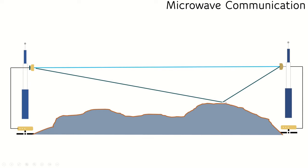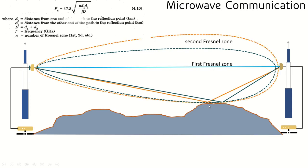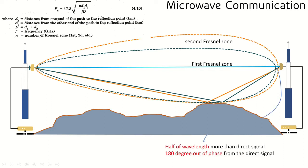In the first condition, the reflected path length is slightly longer than the direct signal — in the range of millimeters to centimeters. The Fresnel zone depends mainly on frequency and distance. Based on these two factors, the Fresnel zone can either shrink or widen.